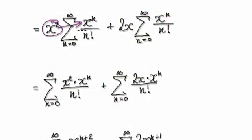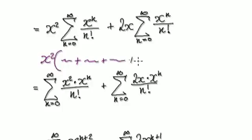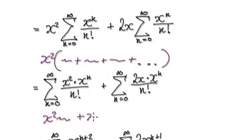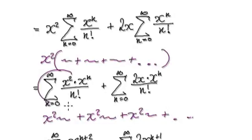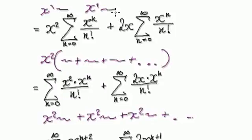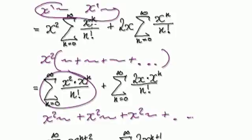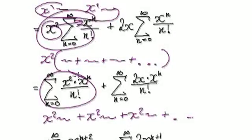The reason why you can push this into here is because here you've got x squared, and here you've got x squared. This thing here will be something plus something plus something all the way to infinity. Well, this times this will give you x squared times something, and this times this will give you x squared times something, all the way to infinity. The point is that this thing here is the same as this — if you push this into here it will become this.